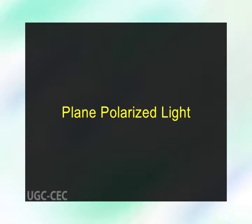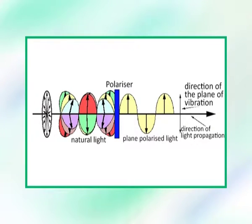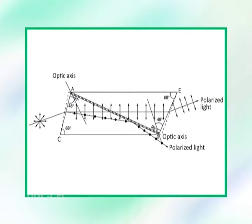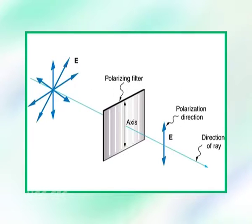Plane polarized light. Ordinary light consists of light waves of different wavelengths. A beam of monochromatic light refers to light of a single wavelength. Under ordinary conditions, light waves oscillate in an infinite number of planes passing through the line of propagation at right angles. When this light is passed through a Nicol prism, its vibrations in all planes except one are either rejected or absorbed, and the emergent beam vibrates only in one direction. Such light whose vibrations occur only in one plane is known as plane polarized light, and the phenomenon is known as polarization.